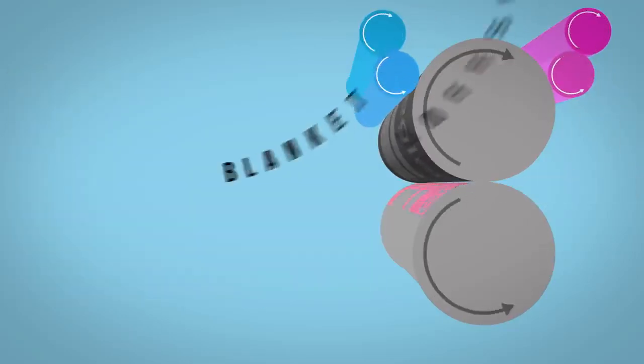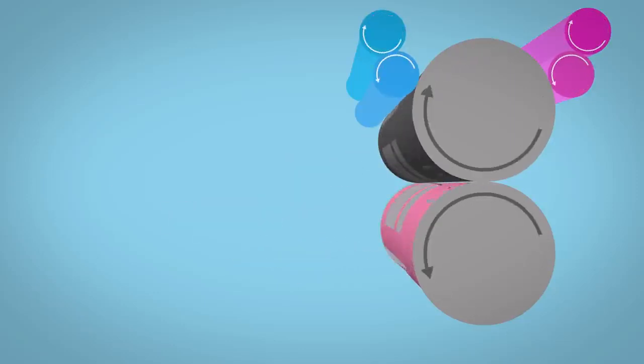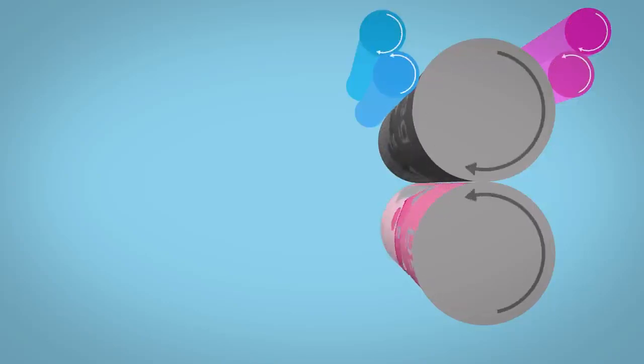This image is then offset onto another cylinder with a rubber blanket. The addition of this process results in a clearer and sharper final image and is where offset printing gets its name.